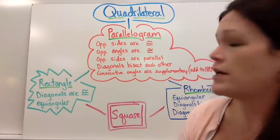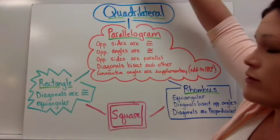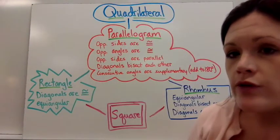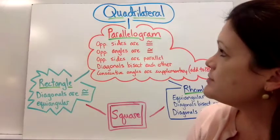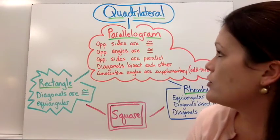I'm going to talk through what this graphic organizer represents. So at the top of my graphic organizer, I have the word quadrilateral. Hopefully you have heard of quadrilateral before. It just means a four-sided figure. But then there are more specific types that we're going to be working with in our unit.